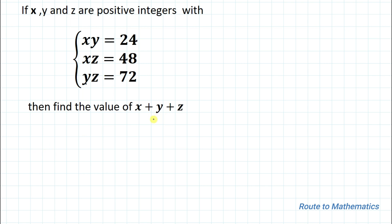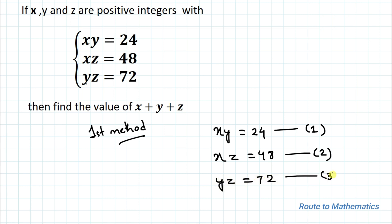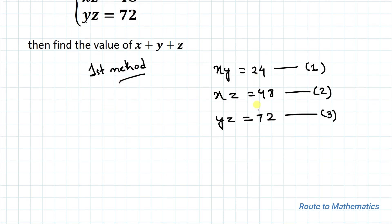I am going to solve this question in two ways. In the first method I am going to use the substitution method. Our first equation is xy = 24, our second equation is xz = 48, and our third equation is yz = 72.